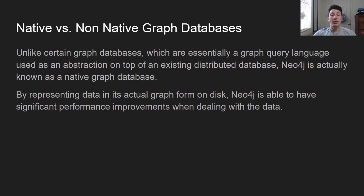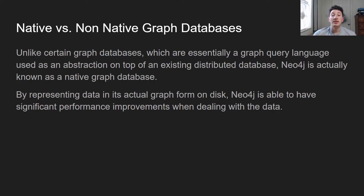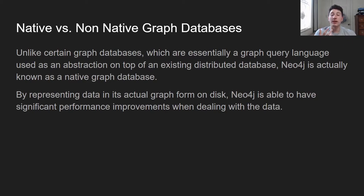A good subset of graph databases are known as non-native, which means they're basically abstractions built upon existing data stores, like Cassandra or perhaps even a relational database system. Those give you a graph querying language, but at the end of the day the data is stored in a typical type of indexing system. However, Neo4j is what's known as a native graph database, in the sense that it stores the data on disk in a different format, which makes it much better able to support graph queries and achieve higher throughput.